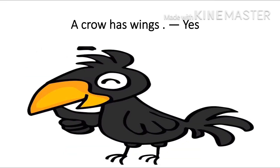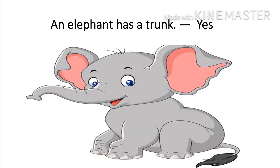Now look at this picture. A crow has wings. So we will write Y-E-S, Yes, because a crow has wings. Look at this elephant. An elephant has a trunk. Of course an elephant has a trunk. So we will write Y-E-S, Yes.